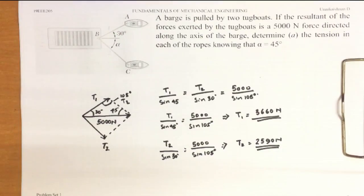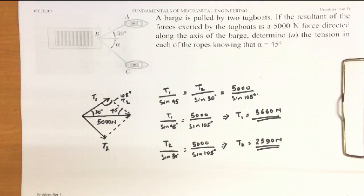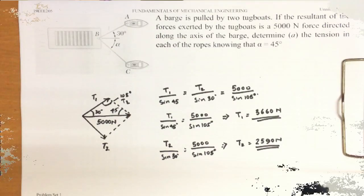Solving these, we get T1 equal to 3660 Newtons and T2 equal to 2590 Newtons. That is how using the simple sine law or trigonometric solution, we can find out the forces acting in two such directions.